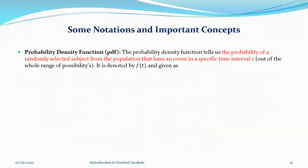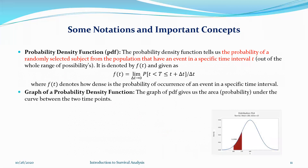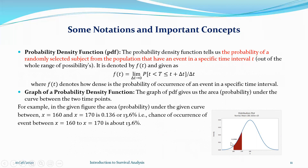We discussed two cases: before time and after time. What about an exact time? Since we're talking about a continuous random variable, the probability at a specific point is zero, so we talk about intervals instead. The probability density function tells you the probability that a randomly selected subject has an event within a specific time interval. As shown in the graph, the probability between 160 and 170 is about 13% — meaning a 13% chance of the event occurring between those two time points.